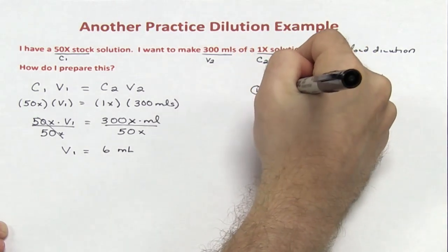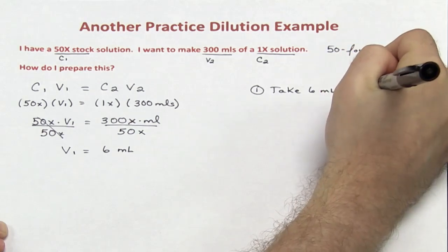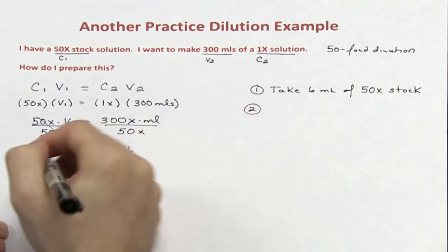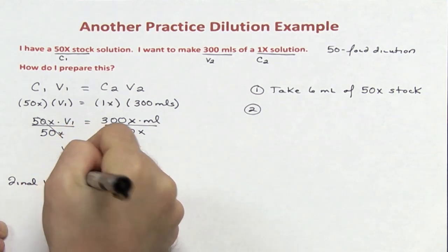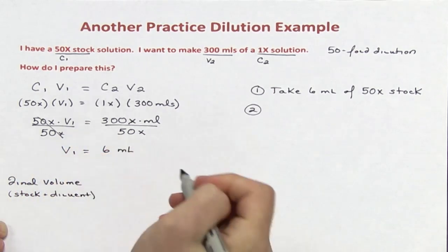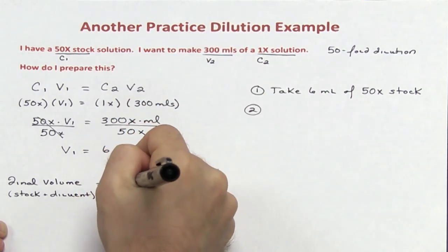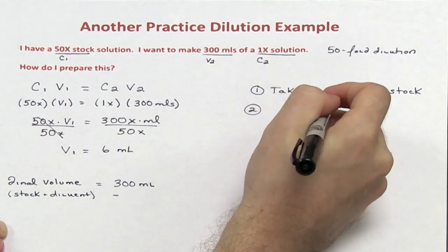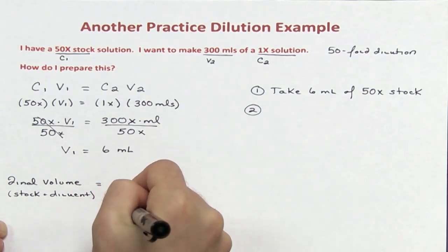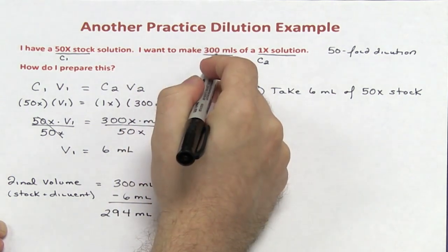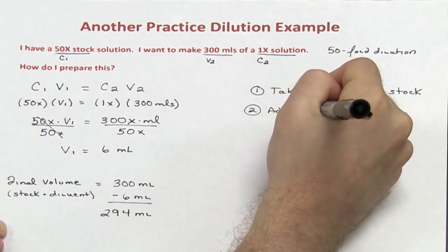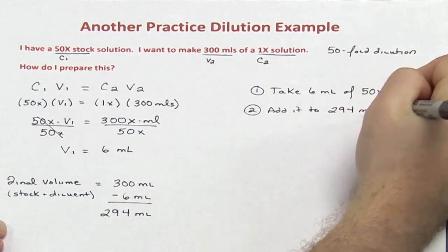How do I prepare this? Step 1: take 6 mL of the 50x stock. Now I need to figure out how much diluent to take. The final volume includes both the amount of stock as well as diluent used. My final volume is 300 mL; subtracting the 6 mL of stock leaves 294 mL. So to prepare 300 mL of this solution, take 6 mL of the 50x stock and add it to 294 mL of diluent.